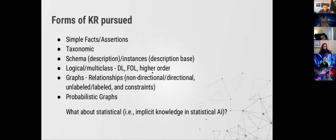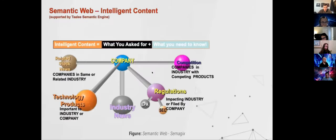There are different forms of knowledge being pursued here: facts and assertions, taxonomy, schema instances, logic, multi-class description logic, first-order logic, graphs where relationships play a big role, probabilistic graphs, and more. This is a very high-level view. This picture was made around 2002 and visually shows a kind of view of the knowledge graph landscape.